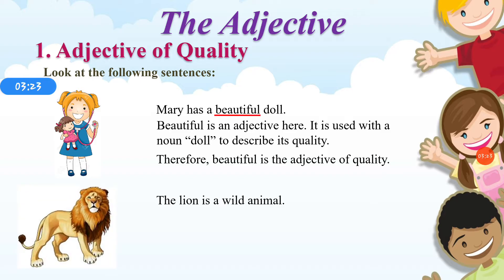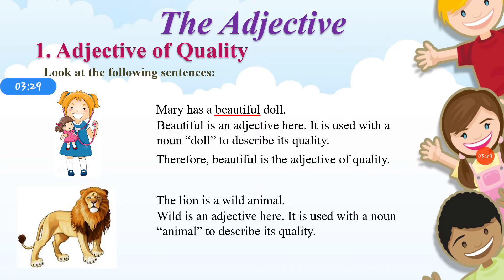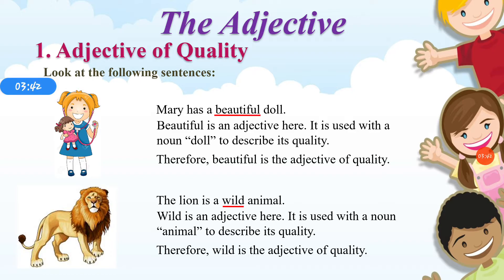The lion is a wild animal. 'Wild' is an adjective here. It is used with the noun 'animal' to describe its quality. Therefore, 'wild' is the adjective of quality. It describes more about the lion.